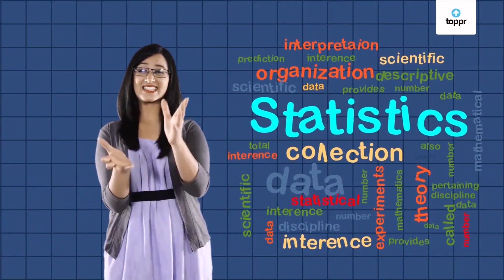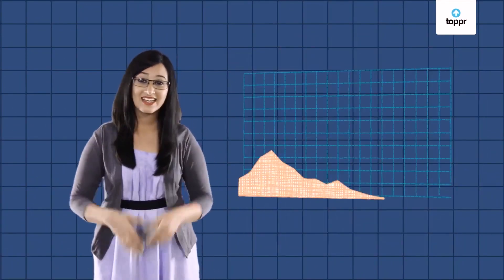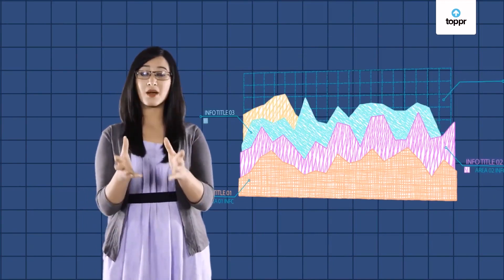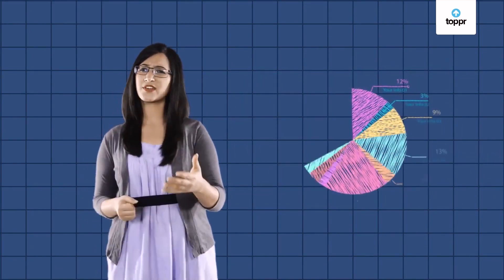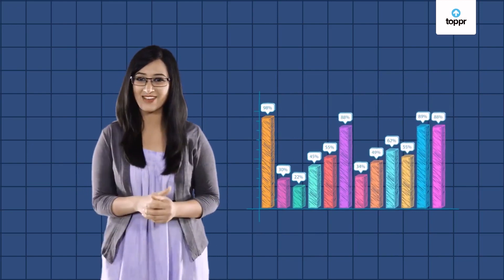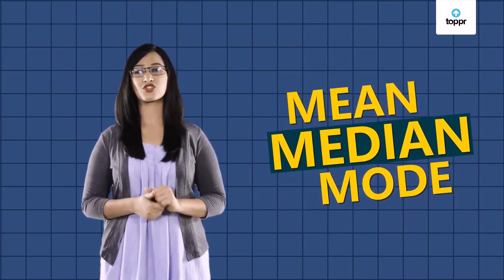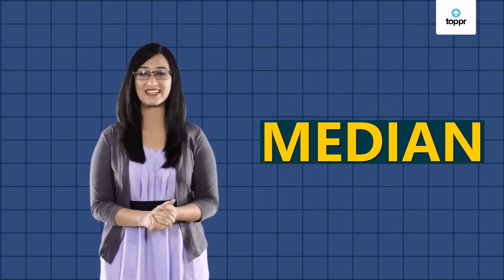Statistics is the art of maths. It allows us to see what numbers look like and helps us figure out what they mean. Values like the measures of central tendency help us represent an entire set of data with just a single value. In this video, we learn about one such measure of central tendency: the median.